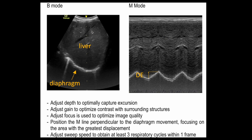As you can see here, this is the liver and this is the diaphragm. Adjust the depth to optimally capture the full excursion of the diaphragm within the window. Adjust gain to optimize contrast with surrounding structures and try to get the best image of the diaphragm. Keep the focus at the level of the diaphragm to optimize image quality.